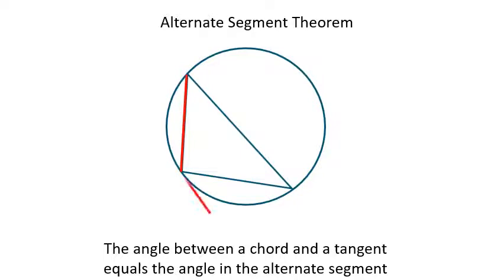The angle between the chord and the tangent is equal to the opposite angle that doesn't use that chord or tangent.